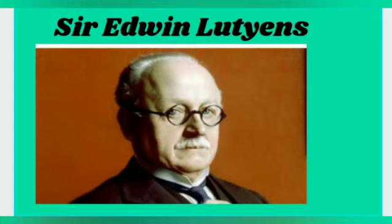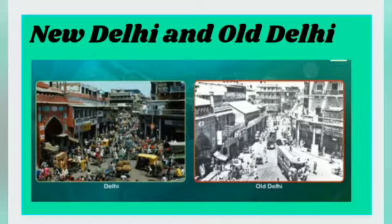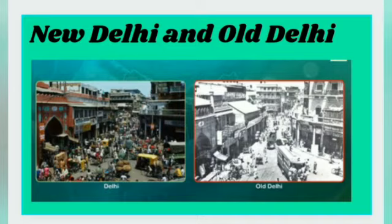New Delhi was built as the capital of India by the English. It was planned by Sir Edwin Lutyens. The city of Delhi is divided into two parts — Old Delhi and New Delhi. Both parts together constitute the national capital territory and city of India. The president and the prime minister live in New Delhi. New Delhi also houses the embassies of many foreign countries.